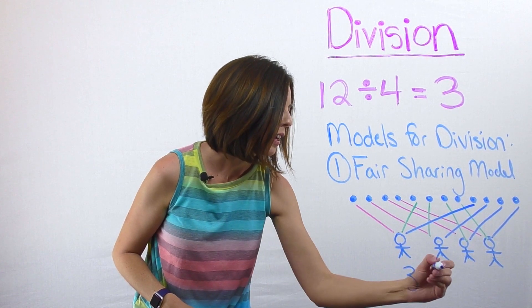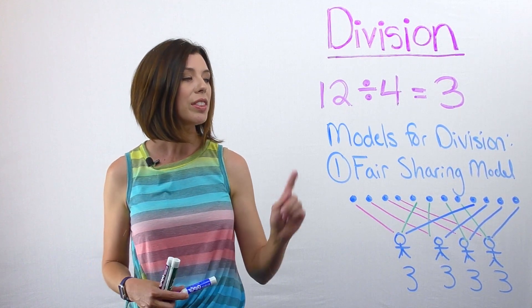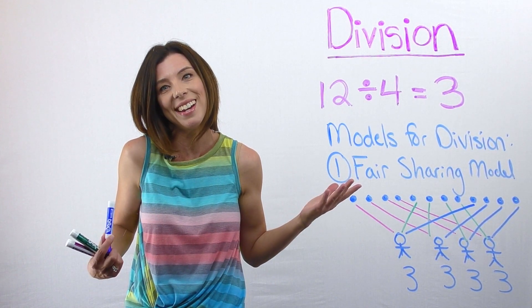I can see that each of my friends get three candies. Again, this is called the fair sharing model. Think of kids sharing candy.